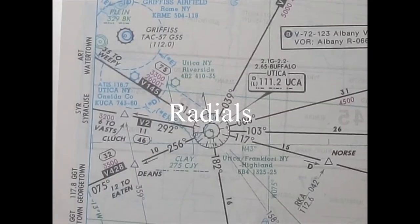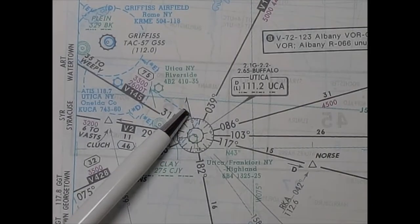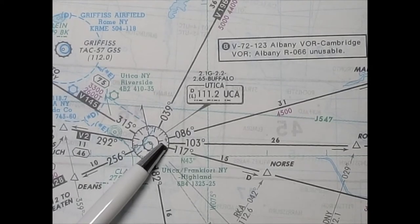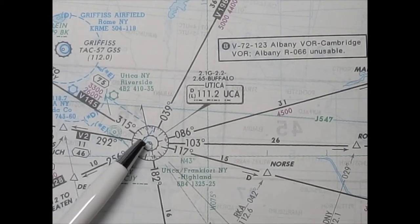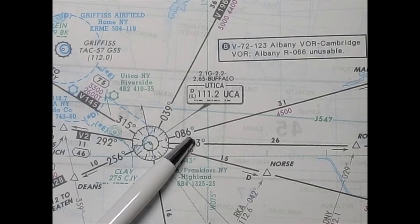On this chart you can also see a magnetic compass needle. And these lines all radiate out. They are actually magnetic radials leading out from this particular navigation aid. This one is a magnetic radial of 039 and a magnetic radial of 86.